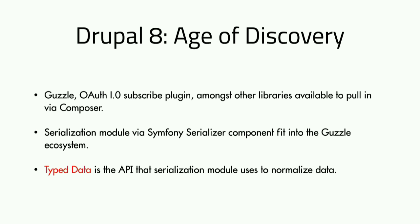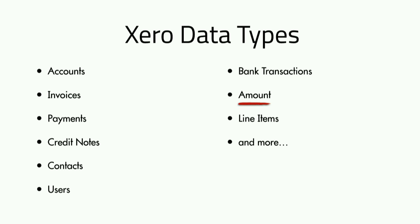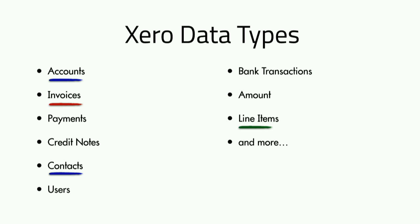I've got Serializer and Guzzle, which solved most of my module. The one thing missing was a way of describing data — and that's where I found type data. Something called type data that describes data types made sense. Looking at the types I'm integrating: simple types like amounts or tax amounts — integers and floats; structured types like accounts — bank accounts or sales accounts; and complex types like invoices, which include accounts, contacts, and a list of line items.